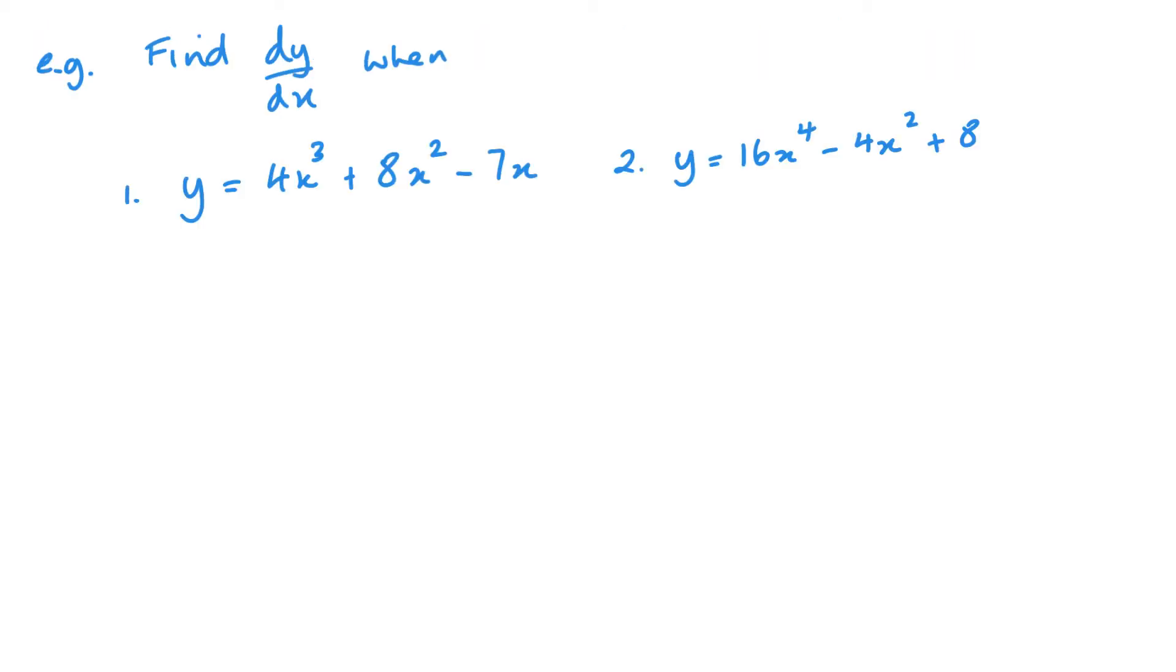So looking at this first one, if I want to differentiate this, what I need to do is multiply by 3 and take 1 away from 3. So this becomes 3 times 4 is 12, x squared. And I want to multiply by 2 and take 1 away from 2. So it becomes 16x. And then 7x becomes just the 7, or minus 7x becomes minus 7, because it's a power 1.